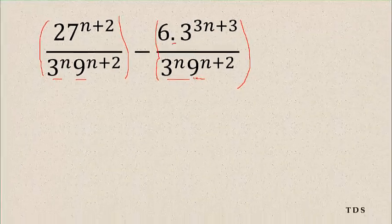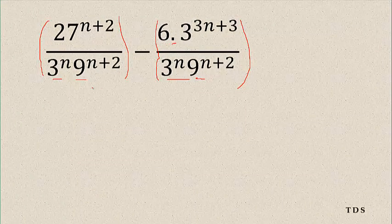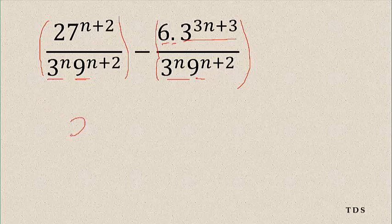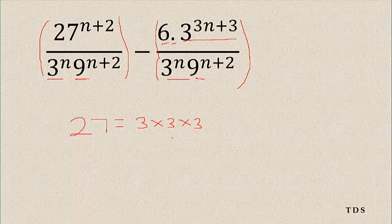Don't forget that this one is a product. We are multiplying this one by this, and this one to use a product — nicely done. Before we can solve this question, first of all, we know that 27 is the same as 3 times 3 times 3.